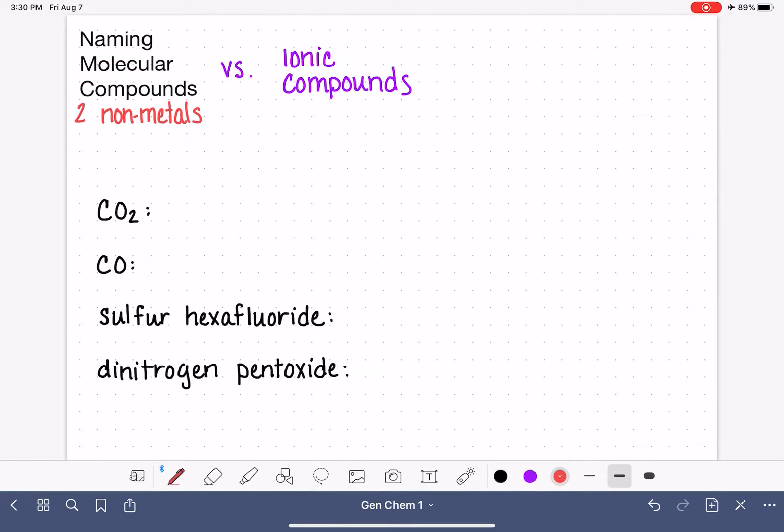Ionic compounds are cations or cations with an anion. Typically, ionic compounds are metals, a metal plus a non-metal, but that's not always the case. So this is usually a metal plus a non-metal, but not always. They're always cations and anions together, and two non-metals together are molecular.